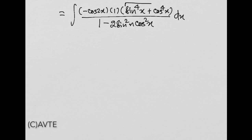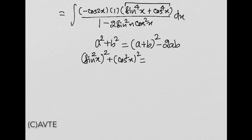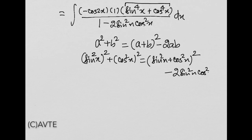अब हम इस expression पर focus करते हैं. sin raised to power 4 plus cos raised to power 4 को मैं a square plus b square की तरह लिख रहा हूँ, जो होता है a plus b whole square minus 2ab. अगर मैं expression को इस identity से relate करूँ, तो sin⁴x को लिख सकता हूँ: sin²x का square plus cos²x का square = (sin²x + cos²x)² minus 2 sin²x cos²x.